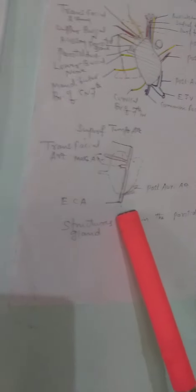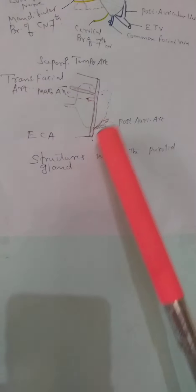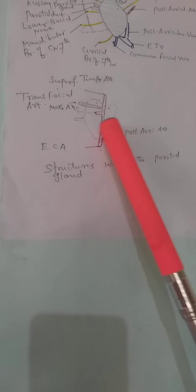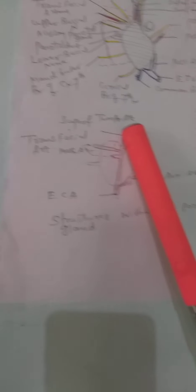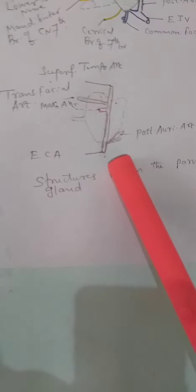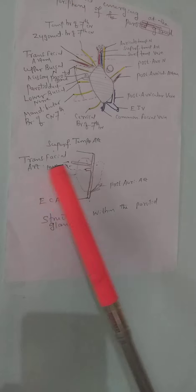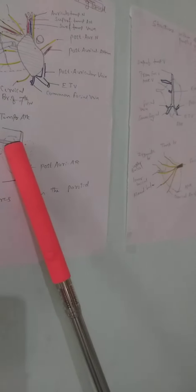The external carotid artery enters the parotid gland posteromedially. Here it gives the posterior auricular branch. Then the maxillary artery, transverse facial artery, and superficial temporal artery are also branches. These are the arterial structures within the parotid gland. The external carotid artery, a branch of the common carotid artery, enters posteromedially and gives the posterior auricular artery, maxillary artery, transverse facial artery, and superficial temporal artery.